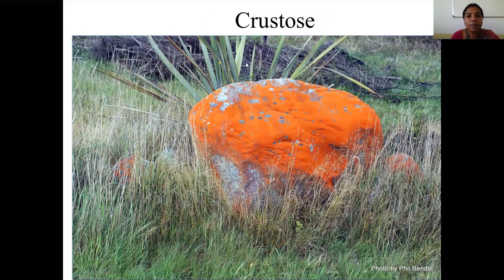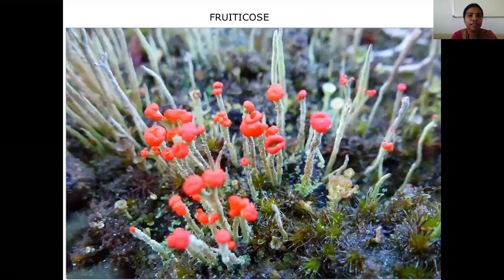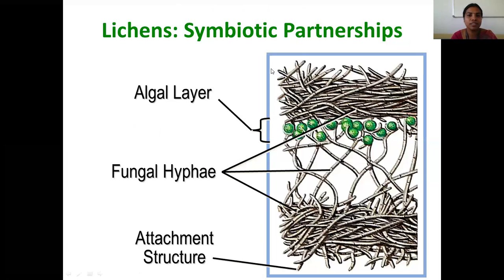Let me see the types of lichens. The first type is crustose lichen, the second one is foliose lichen, the third one is fructicose, and the fourth and last one is squamulose lichen. Now let me see the structure and how the association looks like.